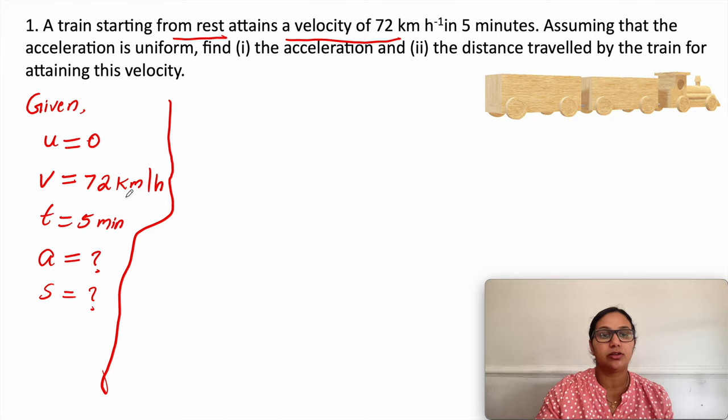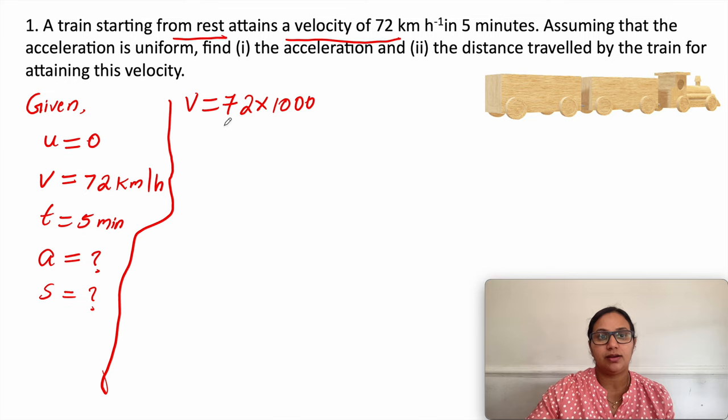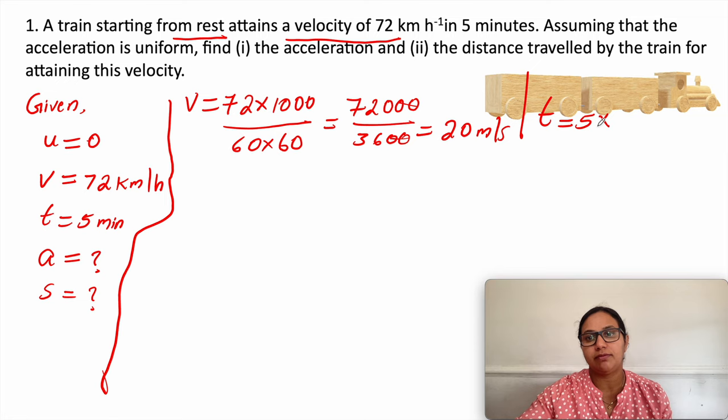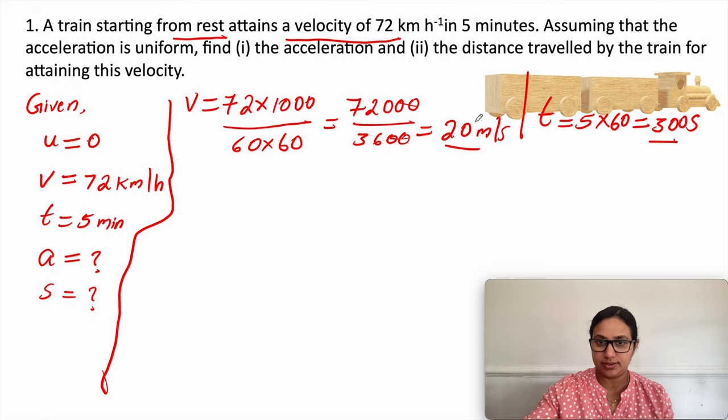First we convert 72 kilometer per hour: 72 into 1000 meters divided by 3600 seconds (60 times 60), which gives 20 meter per second. Next, time is 5 minutes, so 5 into 60 gives 300 seconds. Now all the units are in SI system.